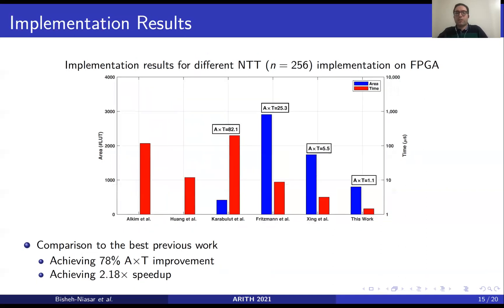For the parameter set of Kyber with n equal to 256, our results achieve more than 78% improvement in terms of area-time product and show a significant speedup factor of 2.18 compared to the best previous work.